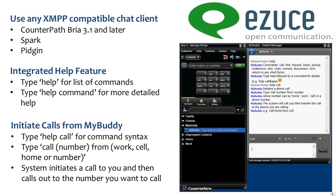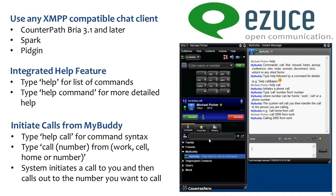You can initiate calls from within MyBuddy. Just type 'help call' for command syntax, or you can type 'call' and any number — whether it's an internal number, external number — and then specify from work, cell, home, or number. The system will first initiate a call to you, then place a call out to the person you're trying to reach, and then connect you.